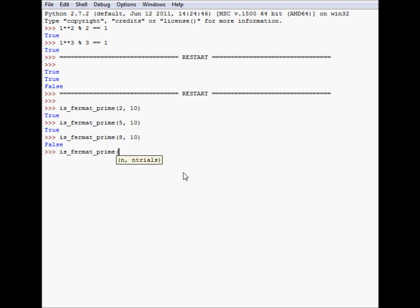Is Fermat prime 17, let's test it 200 times, so this is true. So the first is the number that you want to test for primality, and the second is the number of trials.